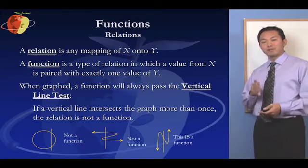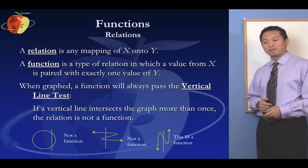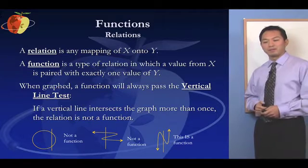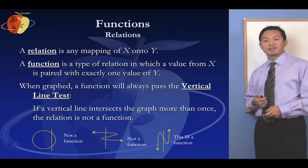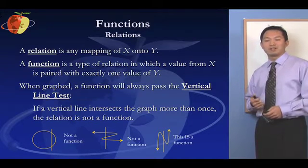The way we can test this graphically, or understand this concept as well, is the vertical line test. So if a vertical line intersects the graph more than once, the relation is not a function.